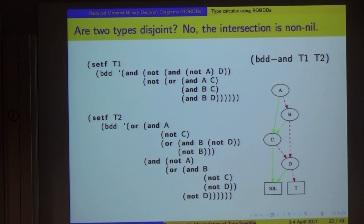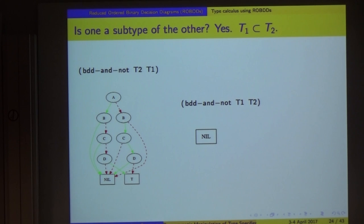Given two types T1 and T2, are they disjoint? We can ask if one is a subtype of the other. We take T2 and subtract out T1 - T2 and not T1 - we get a non-trivial tree. So T2 is not a subtype of T1. But we need to do the same thing the other way: start with T1 and take away T2, then we end up with nil. So T1 is a subtype of T2.